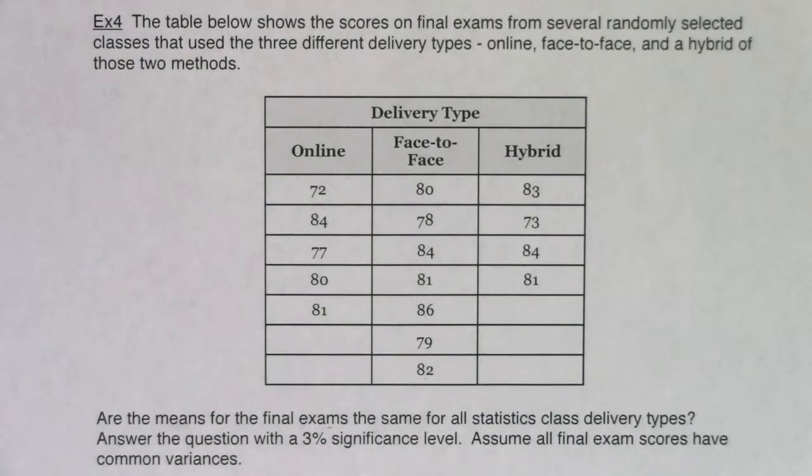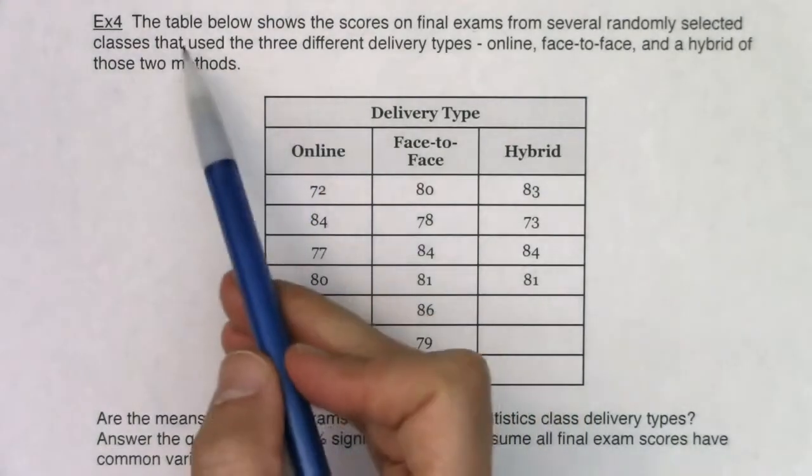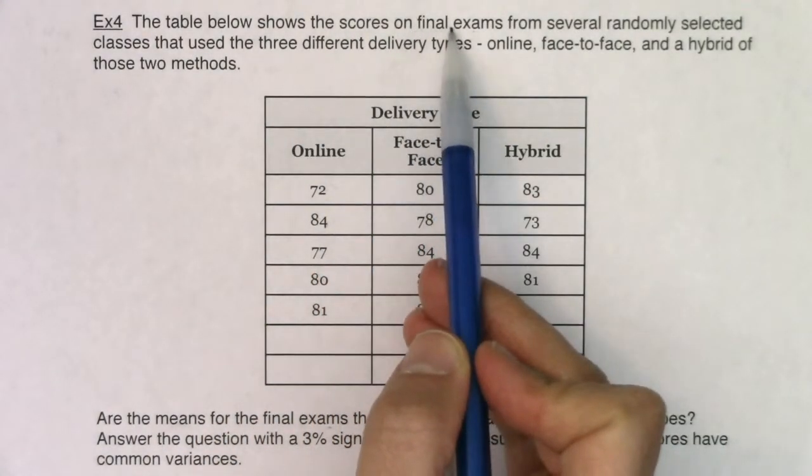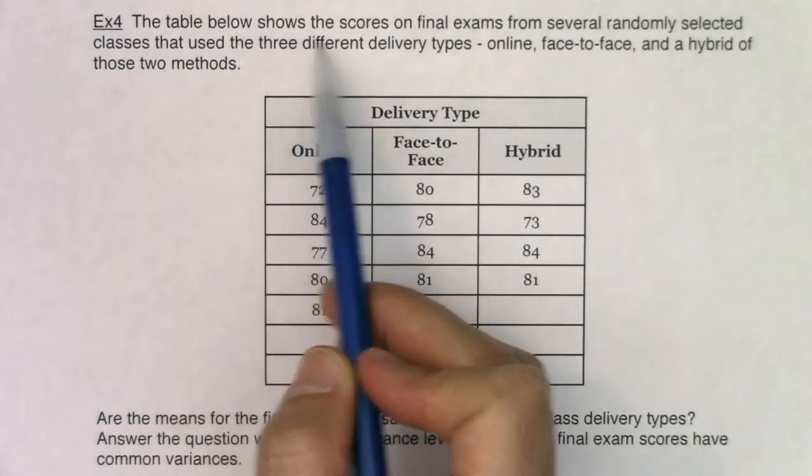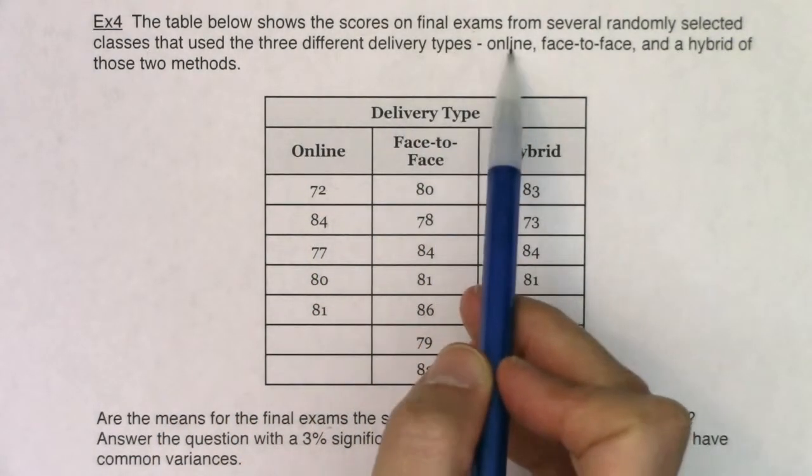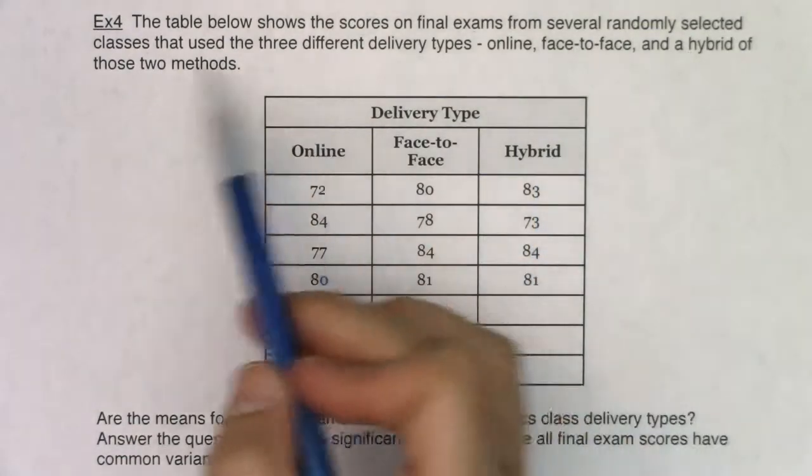Alright, so let's take a look at our next free response. Like always, I'm going to try and figure out what land I'm in. Do I have a numerical or categorical variable? How many groups do I have? The table below shows the scores on final exams from several randomly selected classes that use three different delivery types: online, face-to-face, and a hybrid of these two.